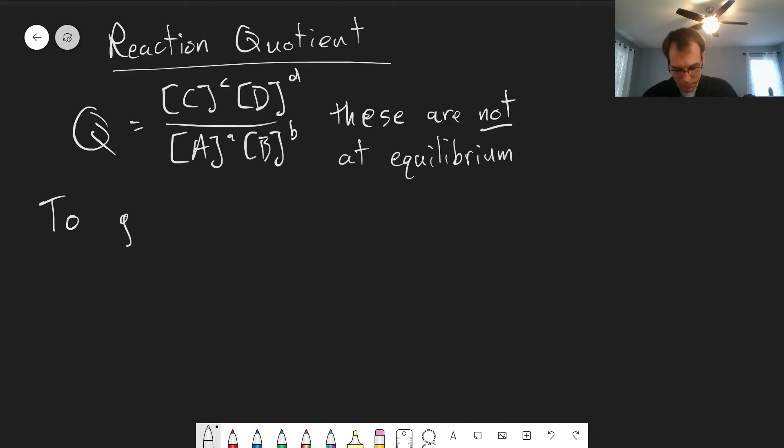To get to equilibrium, a reaction will adjust until the value of Q, which again is something that's going to change as a reaction progresses, is equal to K.